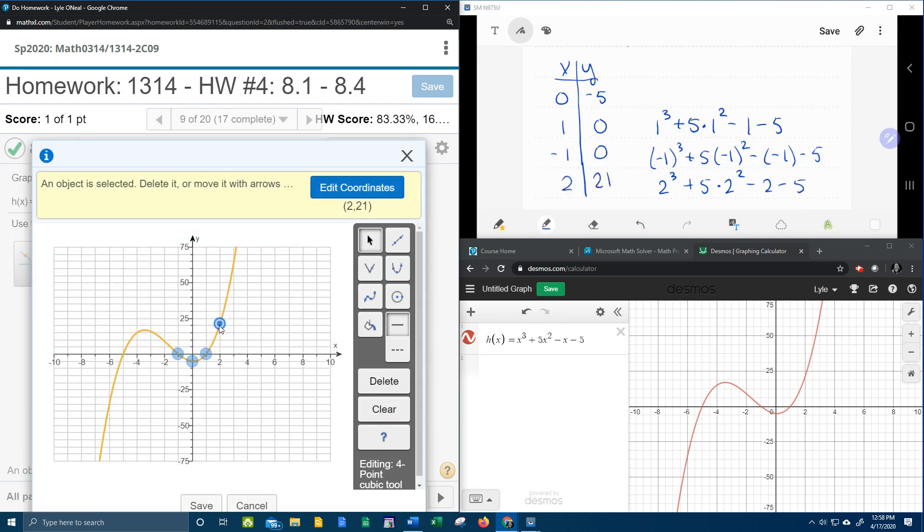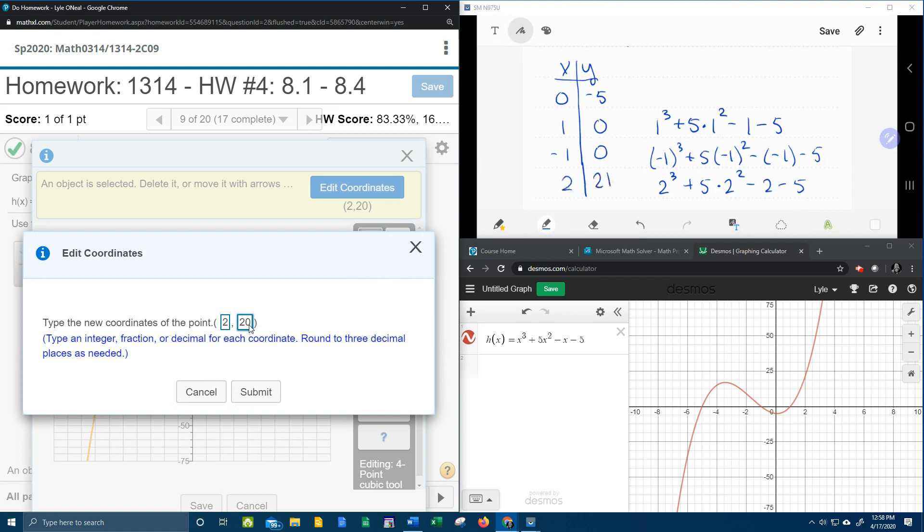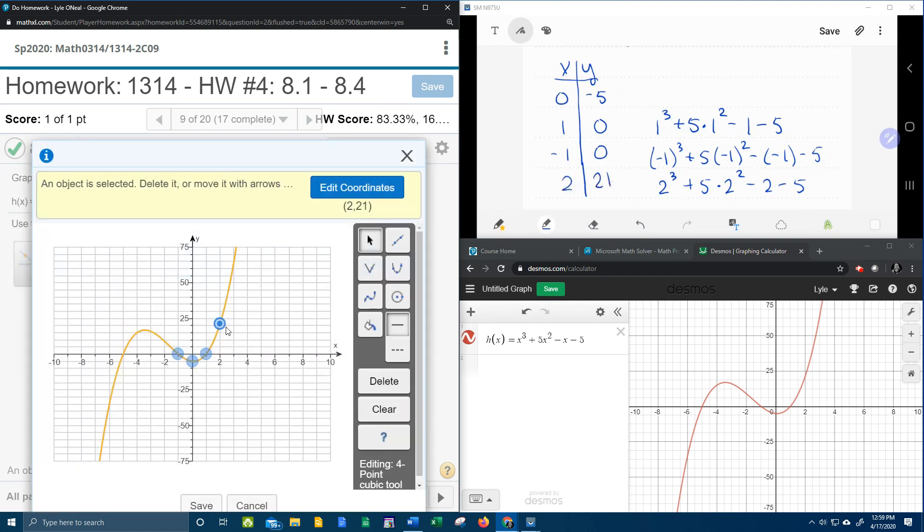Now, I don't know if you noticed what I did, but I clicked on 2, 20, and then I clicked on the graph again. Can you see that? And it's going to give me this edit coordinates tool. So I can change that to 2, 21. Submit. And that puts it right where I need it. All right, so let's save that.